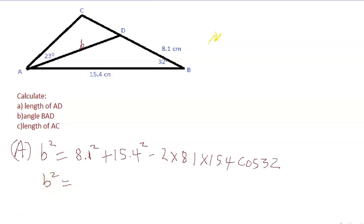Therefore b squared will be equal to - I can use our calculator - 8.1 squared plus 15.4 squared minus 2 times 8.1 times 15.4 cos 32, and that's 91.2.